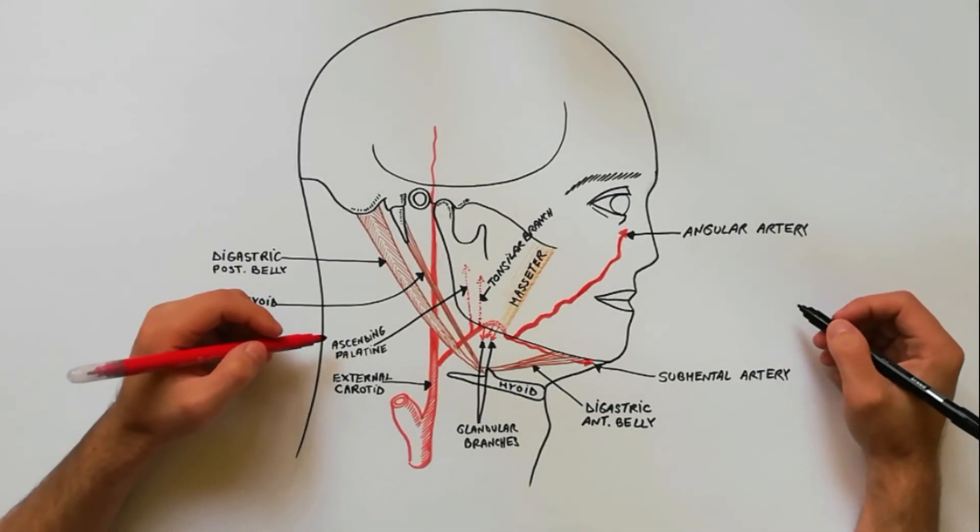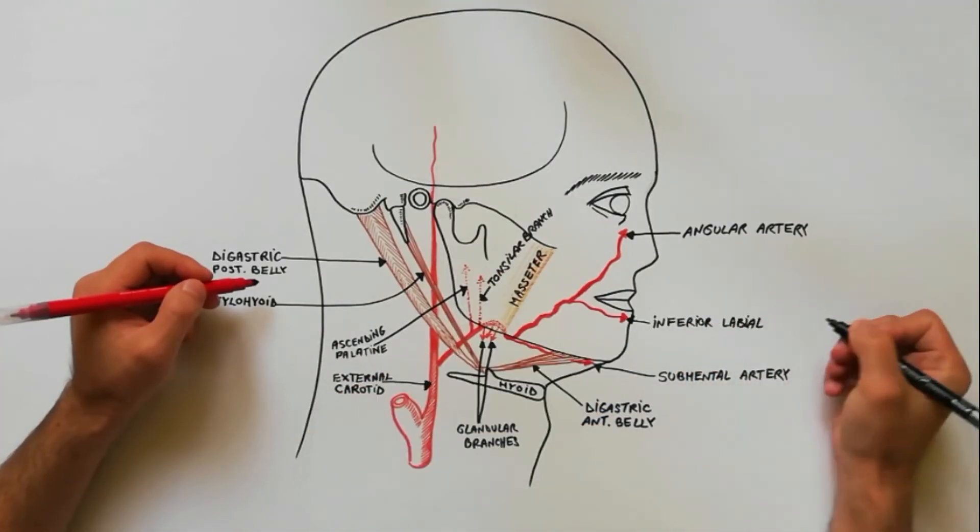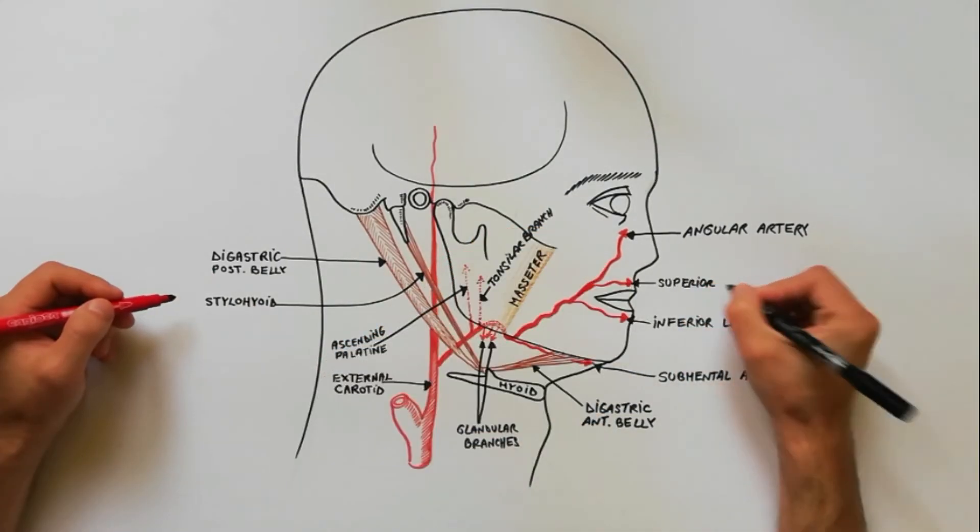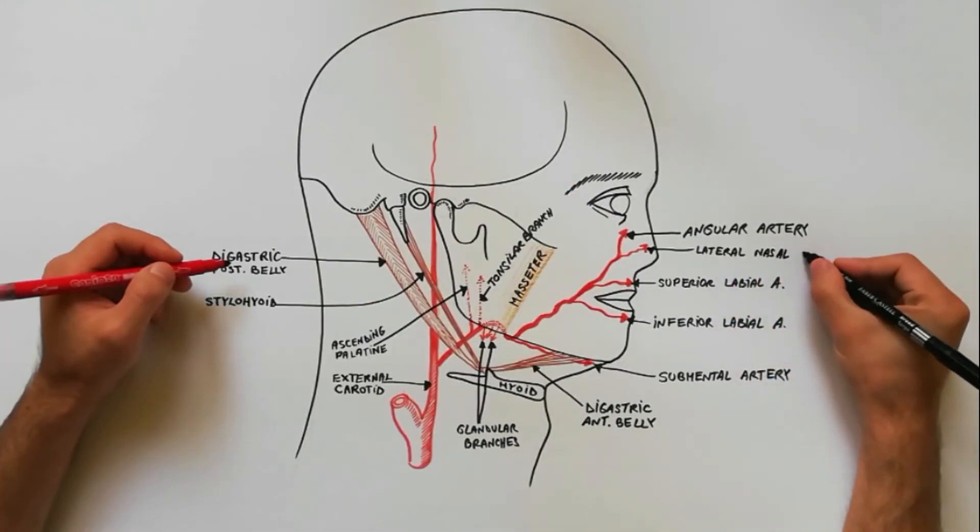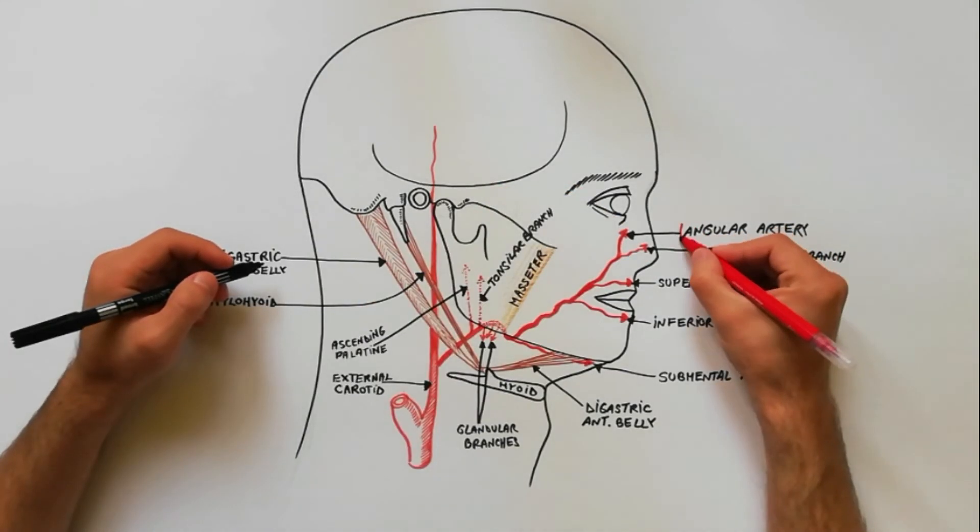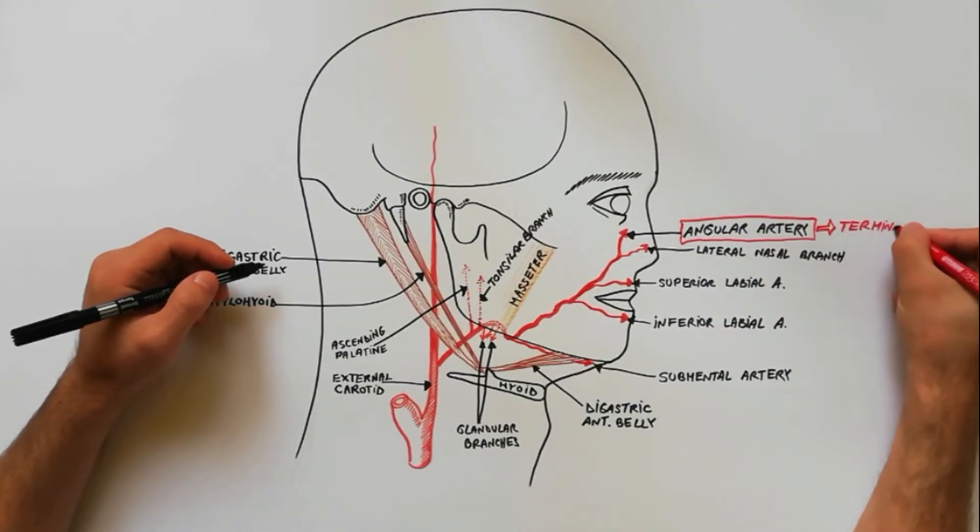From the facial part arise four branches: the inferior labial artery, the superior labial artery, the lateral nasal branch, and the angular artery, which is the terminal branch of the facial artery.